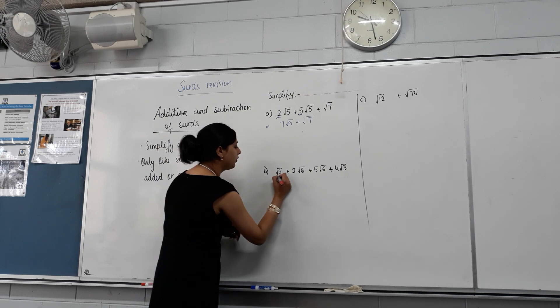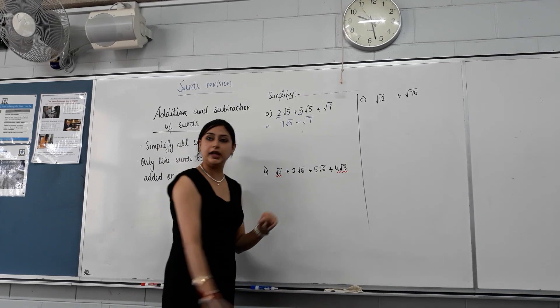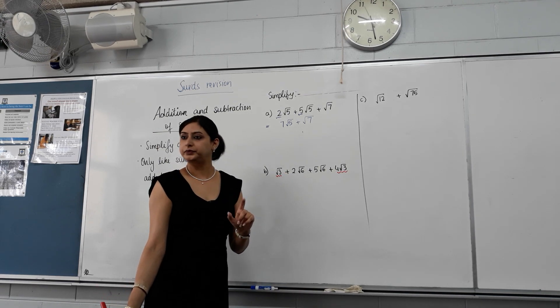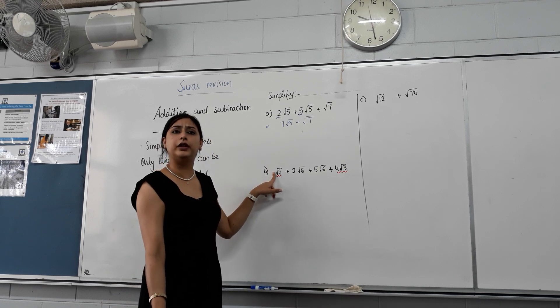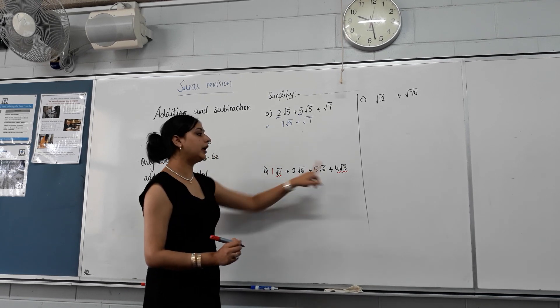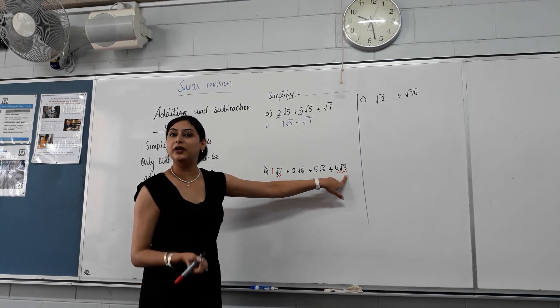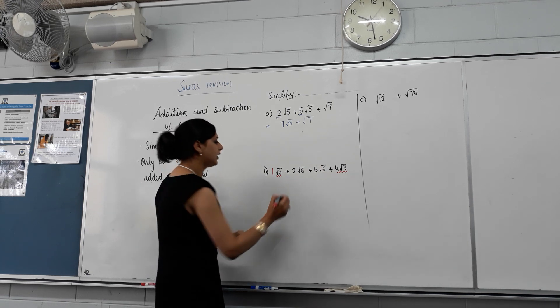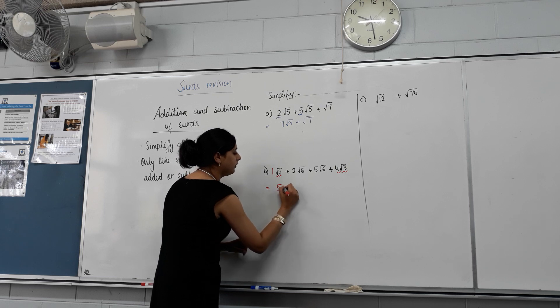So let's identify like surds. Root three and root three. Like surds? Yes. Can I add them? Yes. So there's nothing in front of root three. That means how many root threes? One. So I've got one root three plus four root three. How many root threes do I have? Well done. So equals five root three.